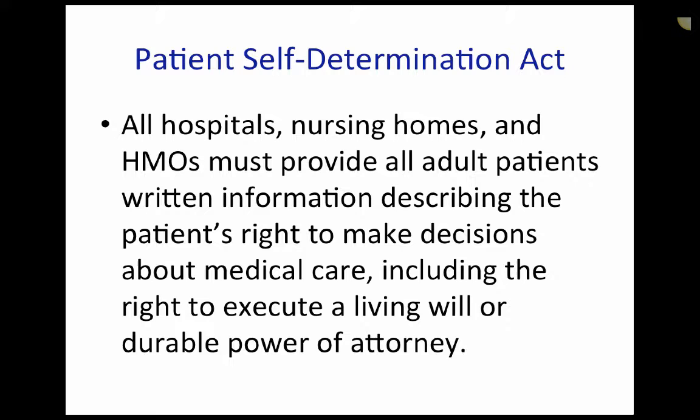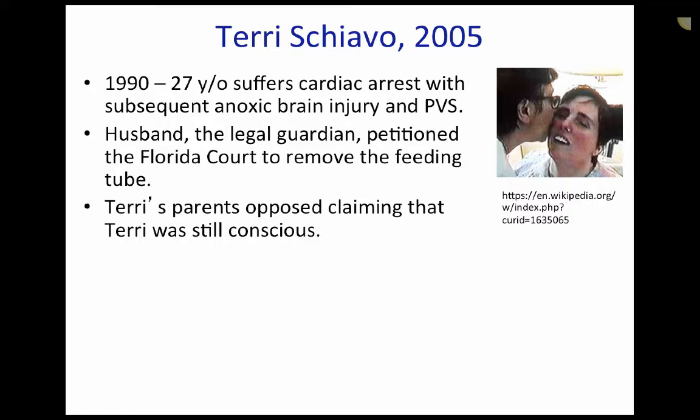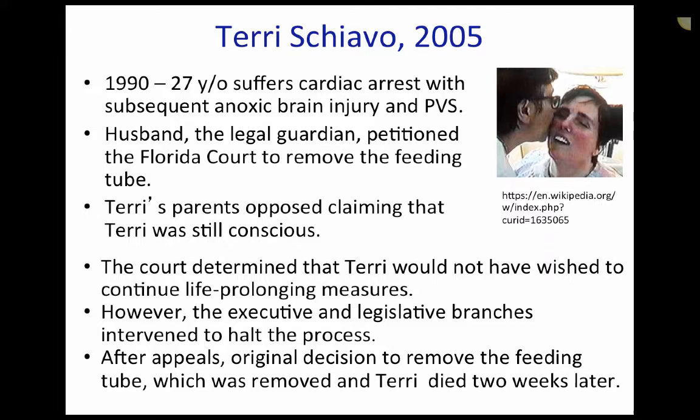Let's review one more case: the Terri Shriver case of 2005. In 1990, Terri Shriver was a 27-year-old who suffered a cardiac arrest with subsequent anoxic brain injury, which left her in a persistent vegetative state. Her husband, the legal guardian, petitioned the Florida court to remove the feeding tube. Terri's parents, however, opposed removing the feeding tube, claiming that Terri was still conscious. The court determined that Terri would not have wished to continue life-prolonging measures. However, the executive and legislative branches in Florida intervened to halt the process. After appeals, the federal court system upheld the original decision to remove the feeding tube, and hence the feeding tube was removed, and Terri died two weeks later.